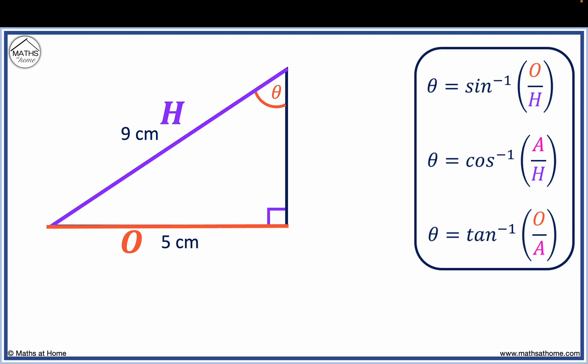The only equation with O and H in it is the sine equation. We write this equation with O equals 5 and H equals 9. On a calculator, this is 33.7 degrees.